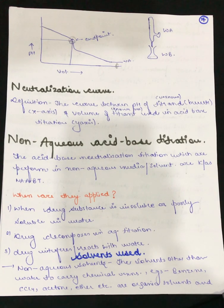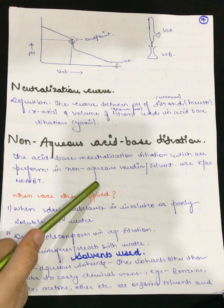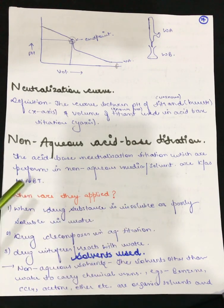Whatever is non-aqueous in nature is going to be our non-aqueous acid-base titration. So the definition is as follows: the acid-base neutralization titration which are performed in non-aqueous medium or solvent are known as non-aqueous acid-base titration. Very easy definition.